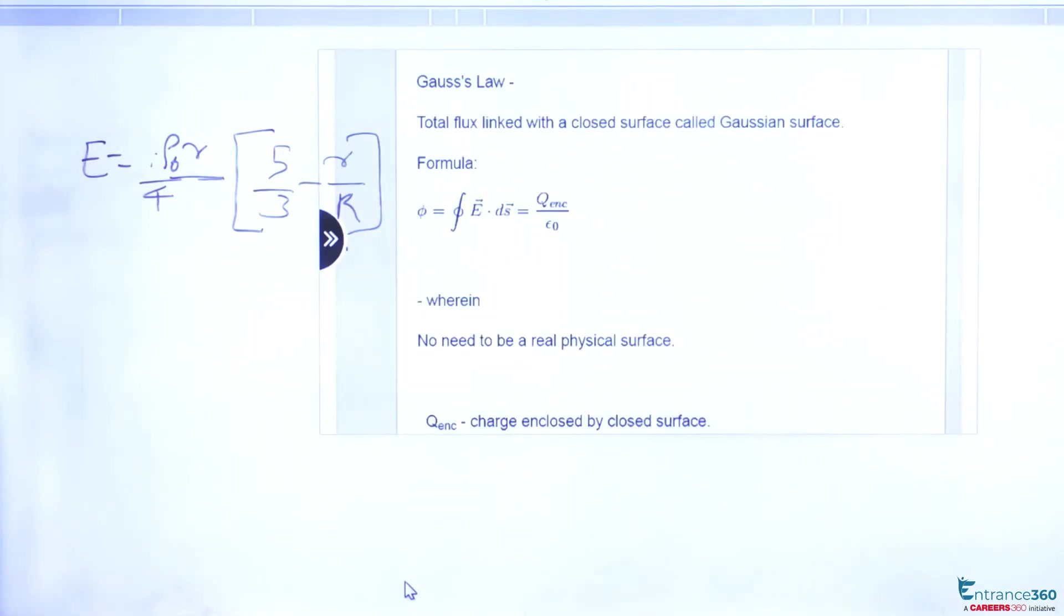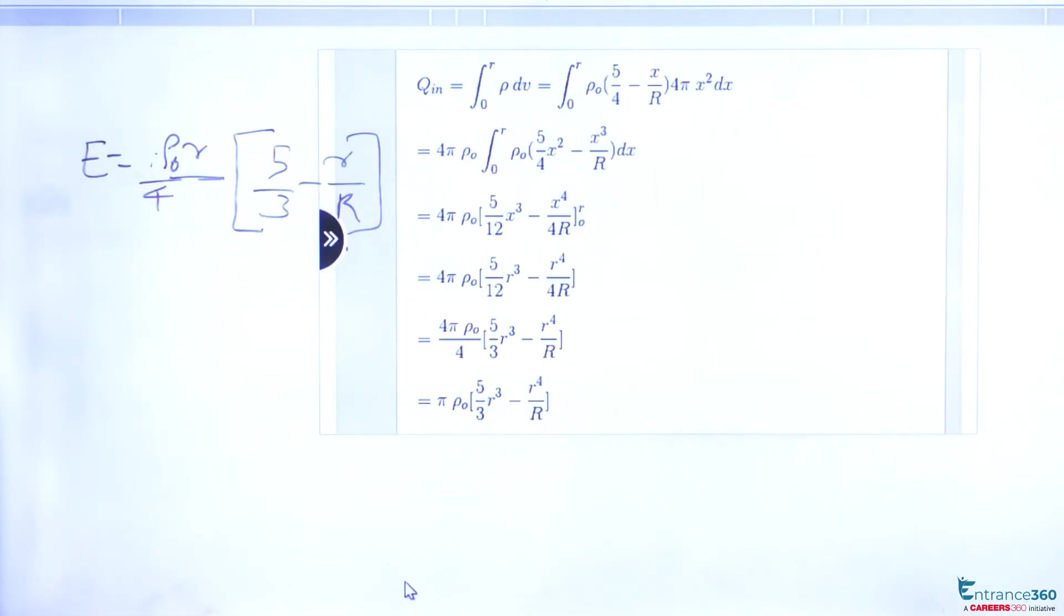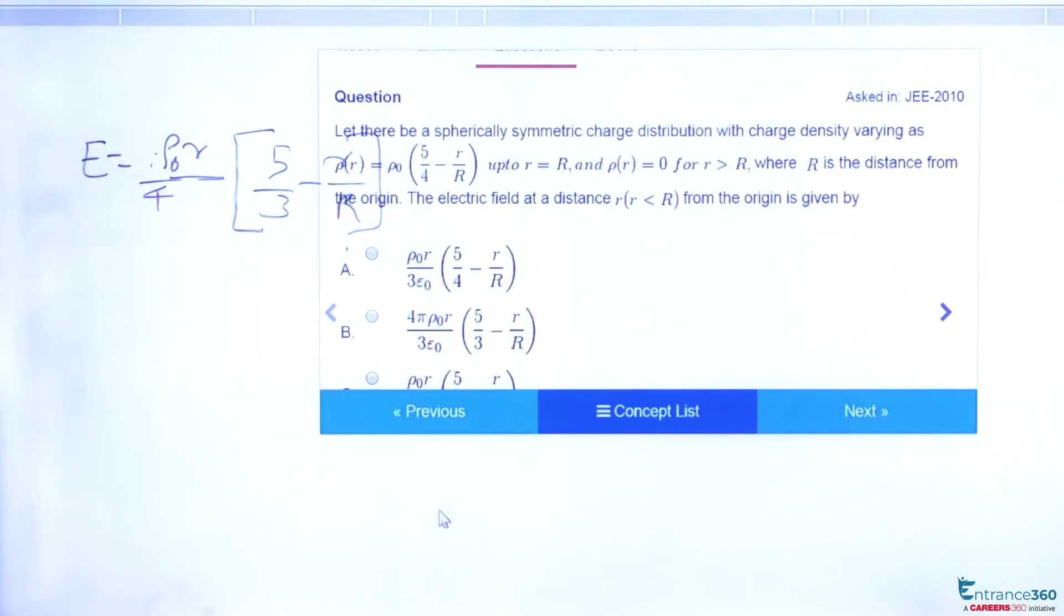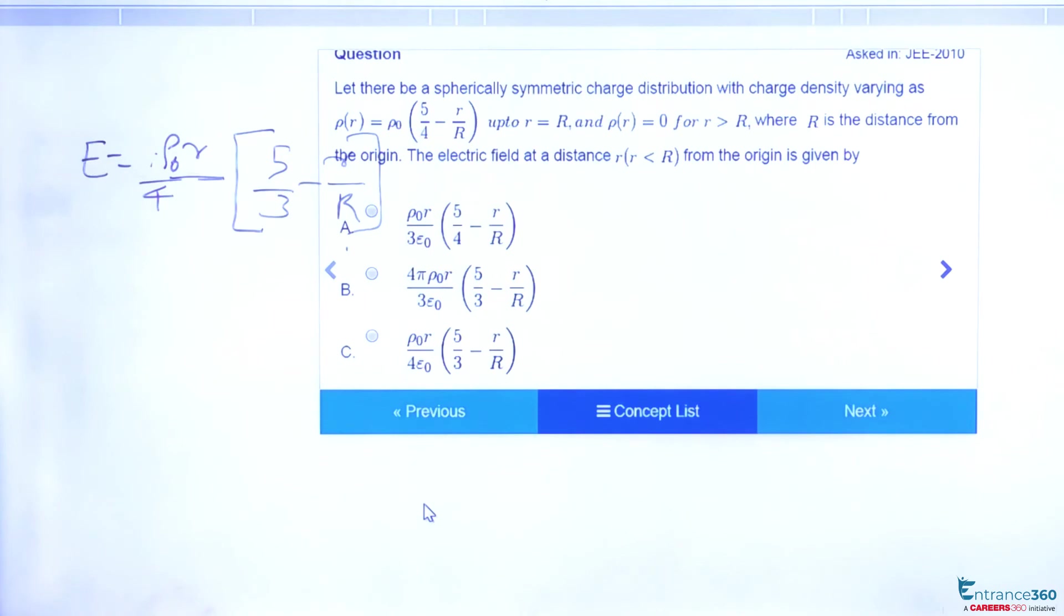So these are the steps involved. And our answer is ρ₀r/4 into (5/3 - r/R), which is our option C. So C is the right answer.